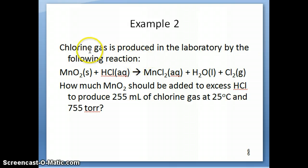Here's an example of a reaction that contains gases. Chlorine gas is a product of this reaction between MnO2 and HCl. The question is: how much MnO2 reactant has to be added to excess HCl to produce 255 mL of chlorine gas at 25 degrees Celsius and 755 torr?